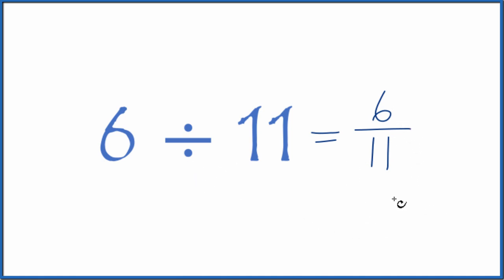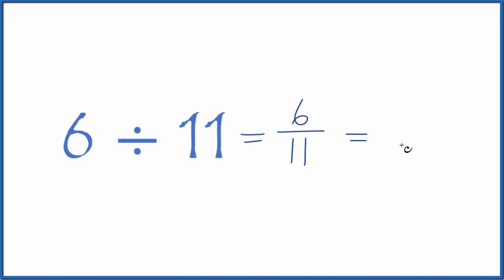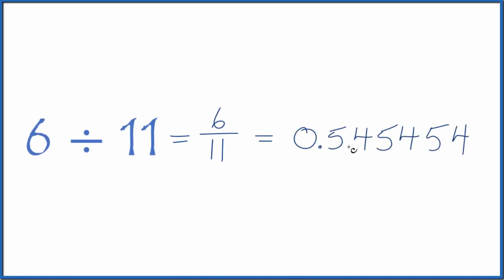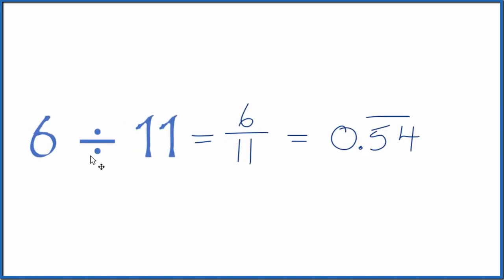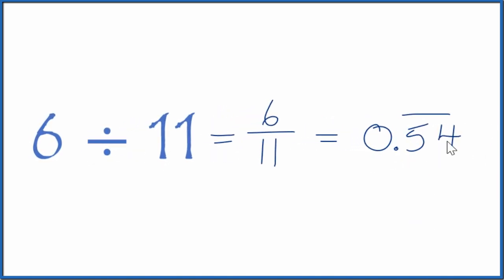So we could call the fraction 6/11. We could also just divide 6 by 11 on our calculator. We end up with 0.545454, and the five-four just keeps repeating, so let's put a bar over this. 6 divided by 11 is 0.54 with the five-four repeating.